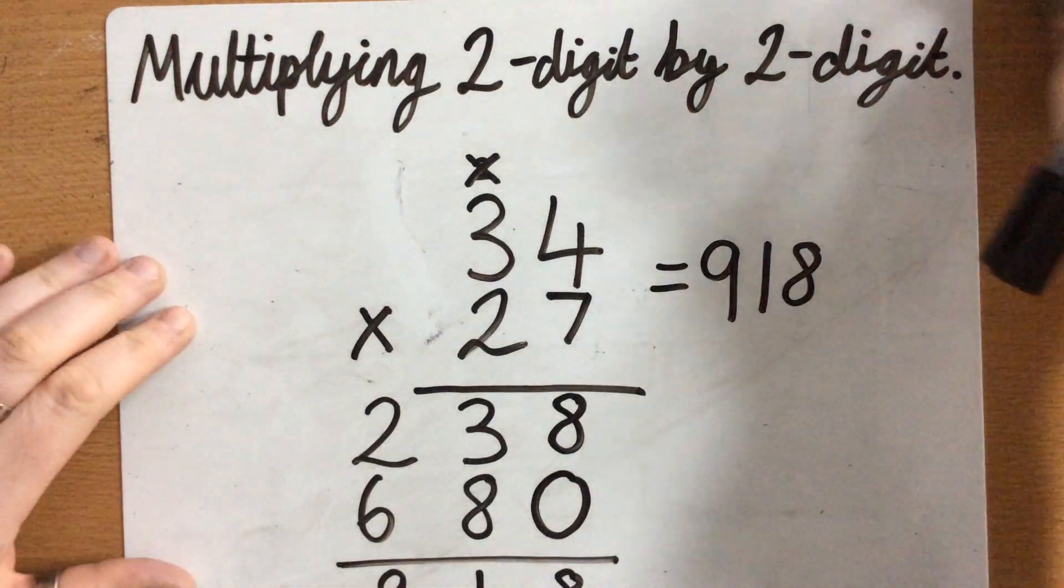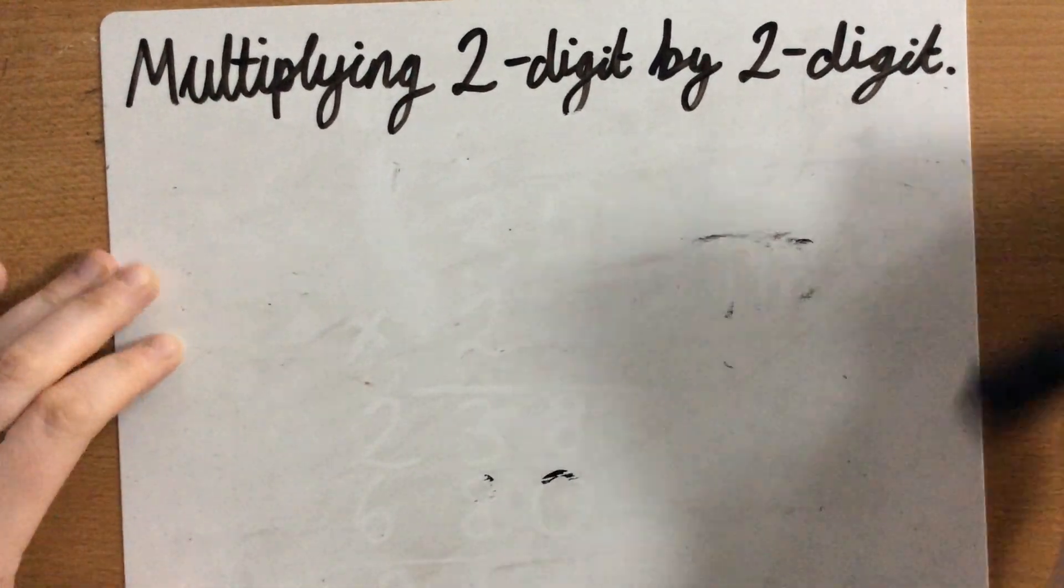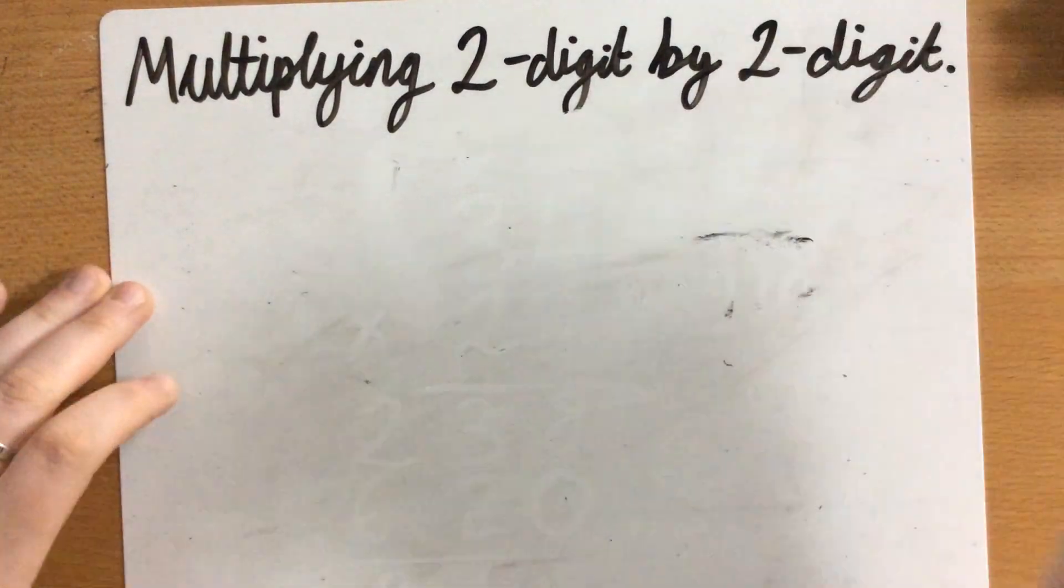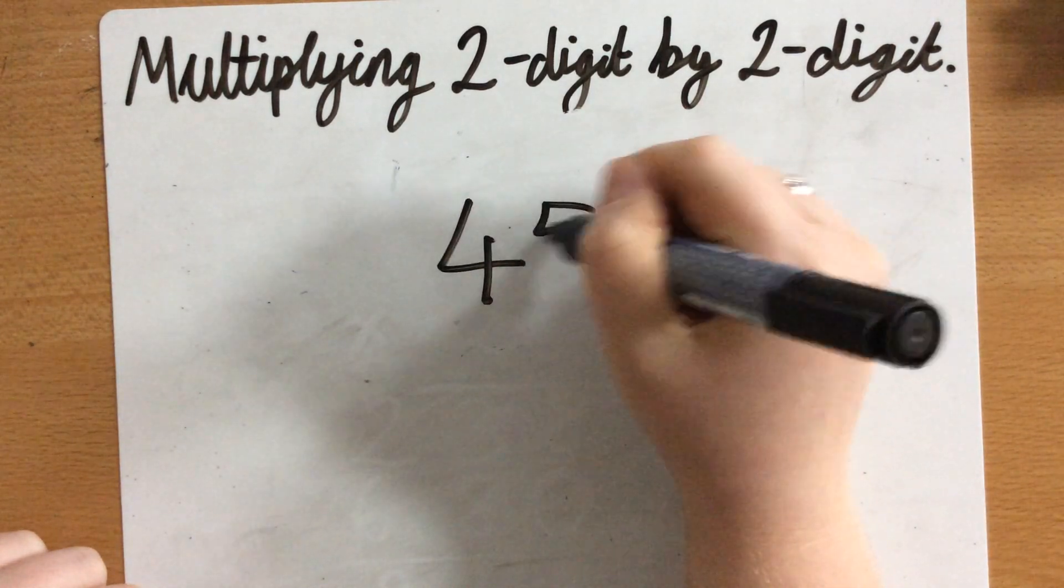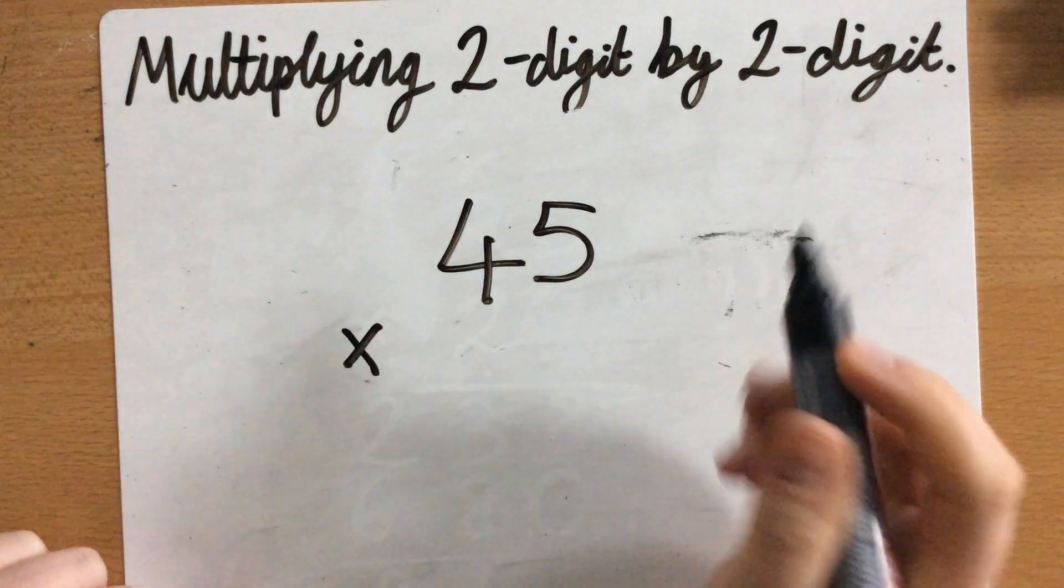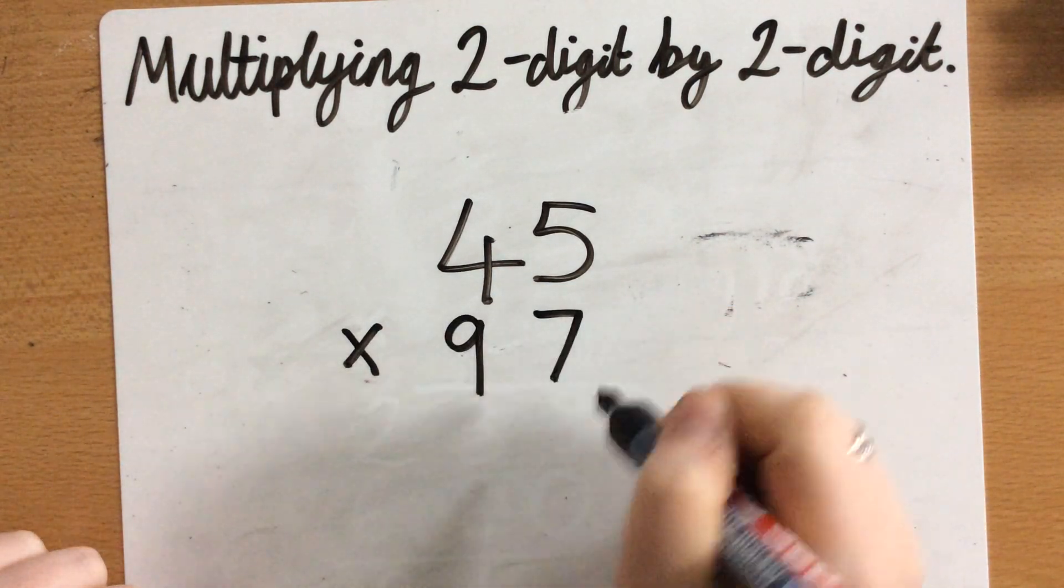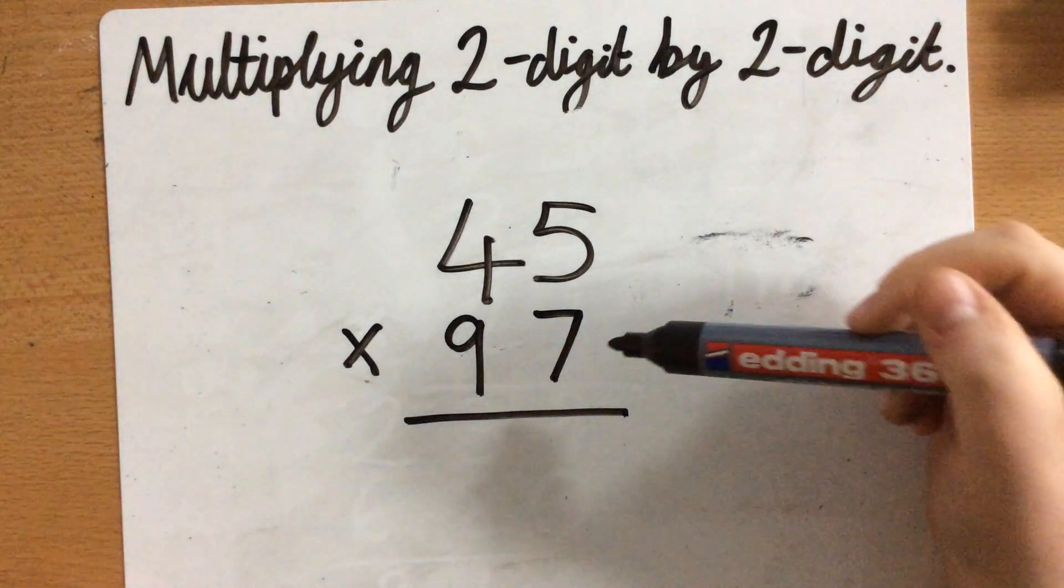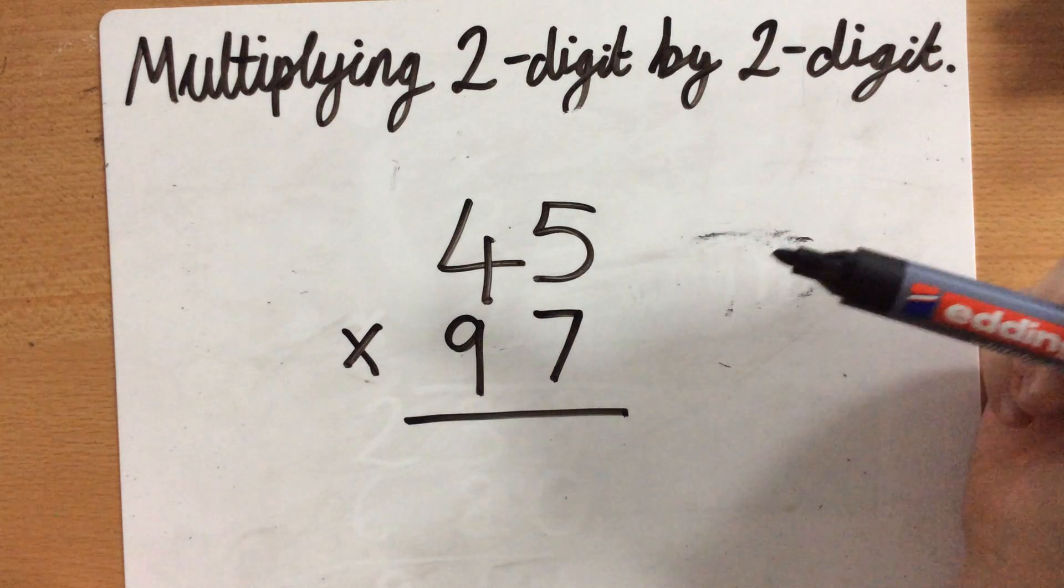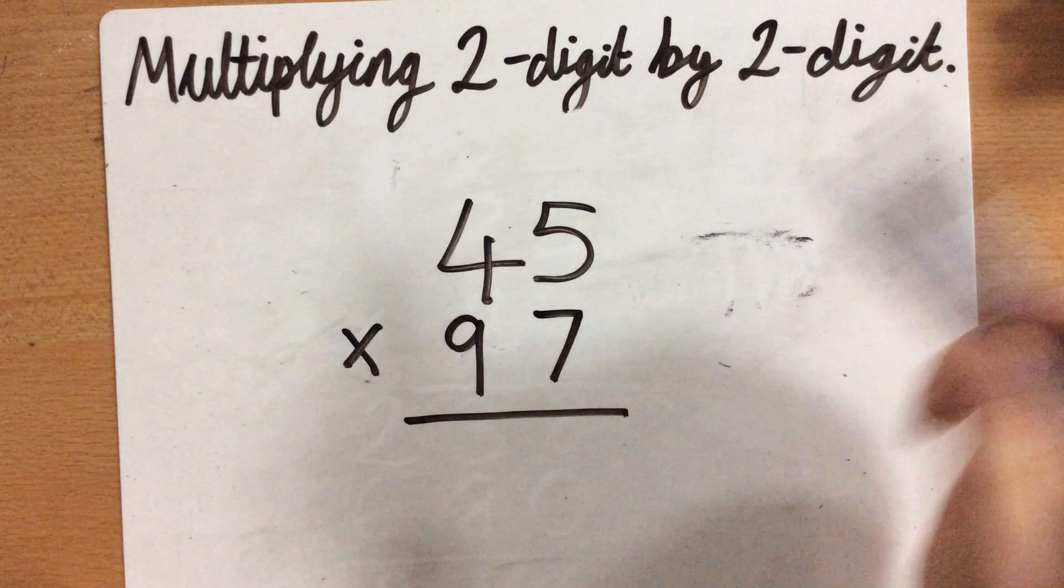OK? So there's the first example. Let's do another one. Let's do 45 times, let's go bigger, 97. OK? So first of all, again, I need to multiply the ones column first. So I'm going to multiply the 7 by 5 and then the 7 by 4.